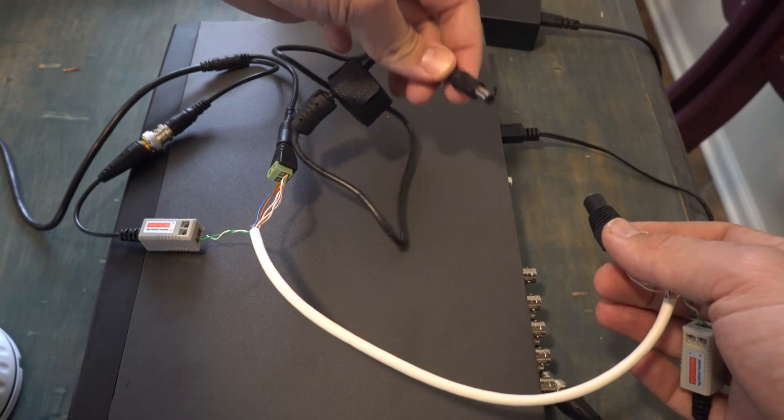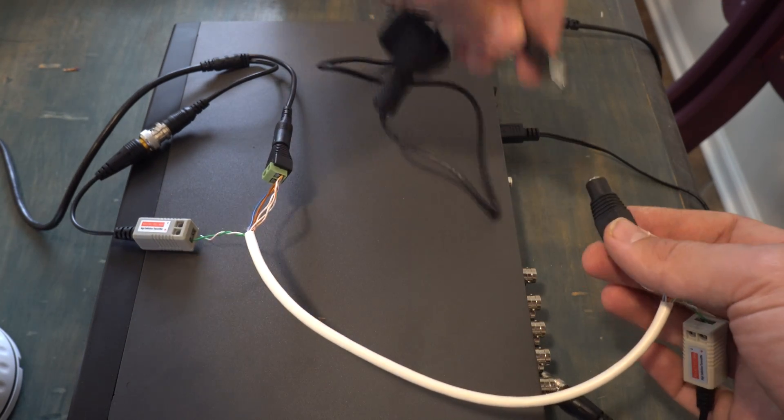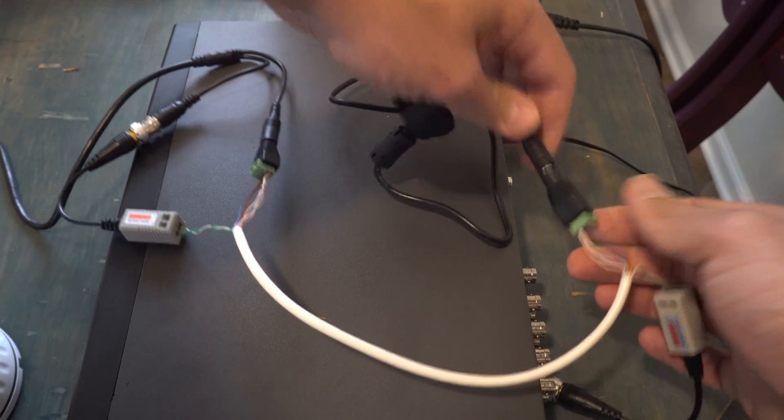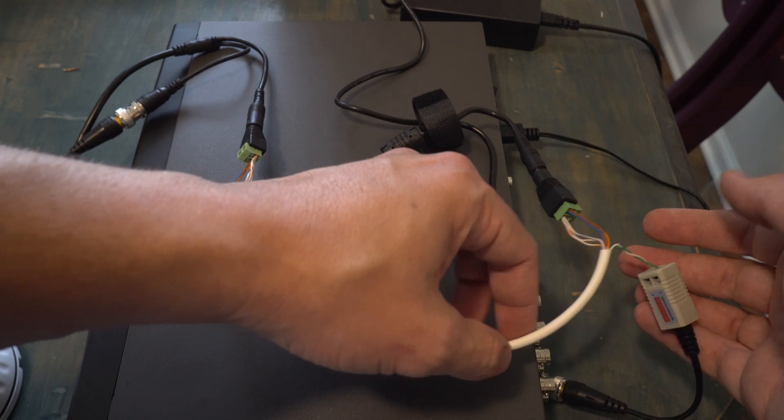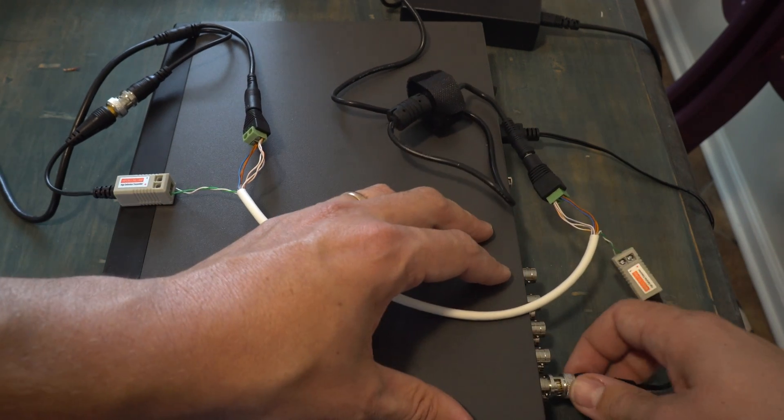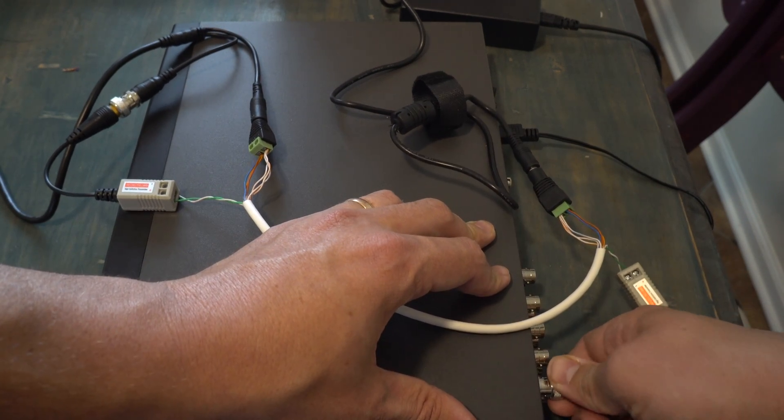So we take this end with the power adapter that we got with the unit, and we plug it in here. Usually this would go into the distributor, but for now it's just this one. And then we take the camera and plug it into the receiver.